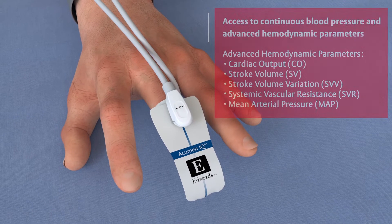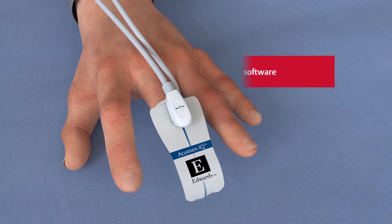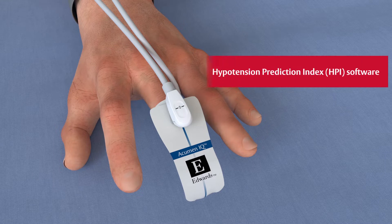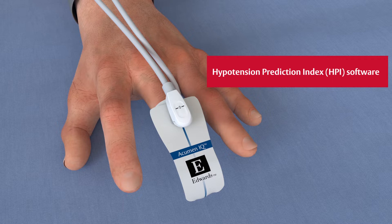Additionally, the AcumenIQ Finger Cuff unlocks the Acumen Hypotension Prediction Index software to enable clinicians to non-invasively detect and address potentially developing hypotensive events before they occur.